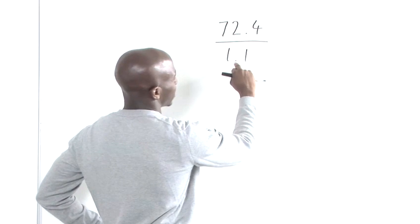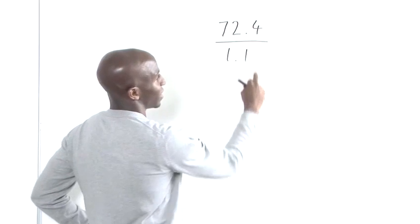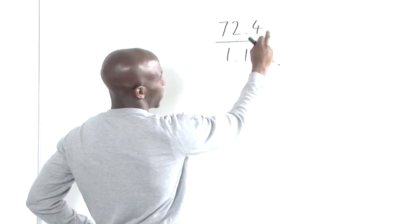And then however many times it takes us to remove the decimal point from just the denominator, that's how many times we move the decimal point back on the top numerator.